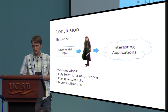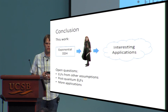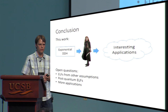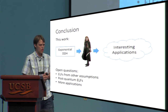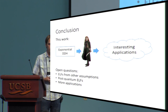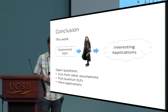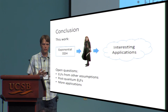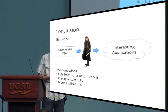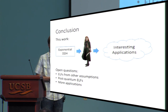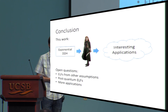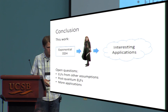To conclude: in this work we show that the exponential hardness of DDH is useful for constructing ELFs, and ELFs are useful for a variety of interesting applications involving instantiating random oracles. Open questions include: can we build ELFs from other assumptions? Right now we need exponential hardness of DDH — could we base it on exponential hardness of learning with errors? The current lossy functions based on LWE don't seem quite lossy enough. A related question is whether we can get post-quantum ELFs, since quantum computers can break DDH — building from LWE would be fantastic. Lastly, can we find more interesting applications of ELFs?